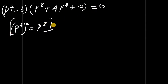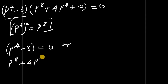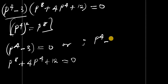This was just for illustration. Now let's equate each factor to zero. We have p to the power of 4 minus 3 equals zero, or p to the power of 8 plus 4 times p to the power of 4 plus 12 equals zero. Starting with the first: p to the power of 4 equals 3.